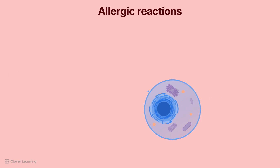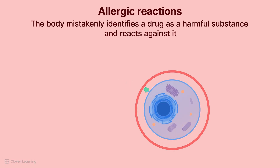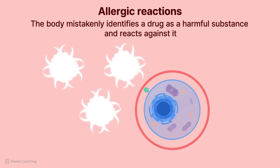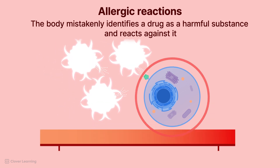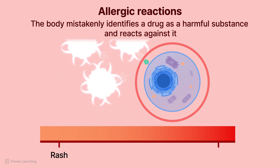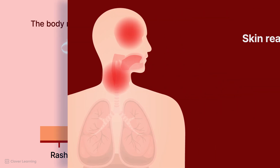Allergic reactions occur when the body's immune system mistakenly identifies a drug as a harmful substance and reacts against it. These reactions can range from mild, such as a rash, to severe, like anaphylaxis. Common mild to moderate symptoms of allergic reactions are typically skin reactions.